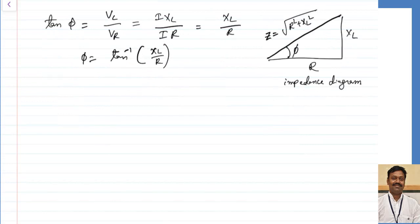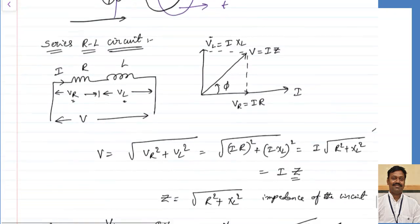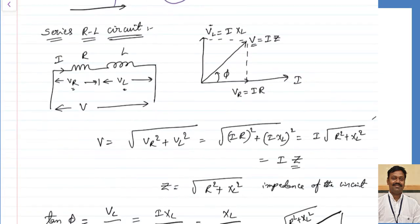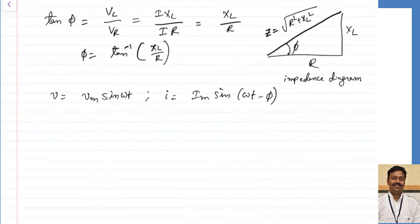Let us try to calculate the power. To calculate power, I need the voltage and current values. Taking voltage as reference: V = Vmax·sin(ωt), then I = Imax·sin(ωt − φ). If taking voltage as reference, the current is lagging behind the voltage by some angle phi. Current always lags the voltage by some angle in the case of an inductive load. If it is pure inductive, it will be 90 degrees.